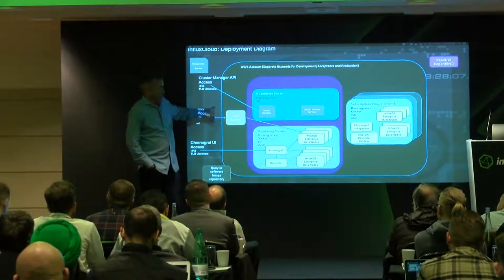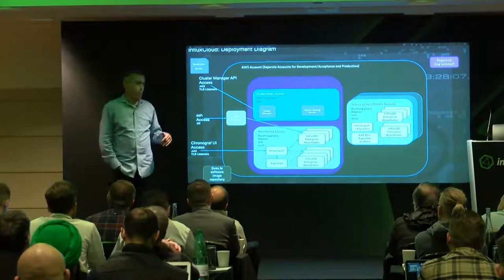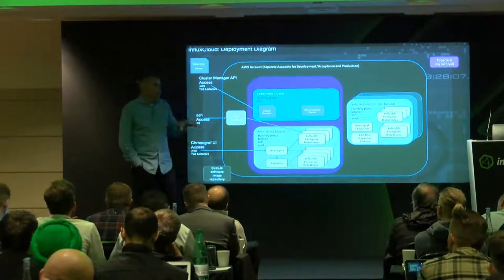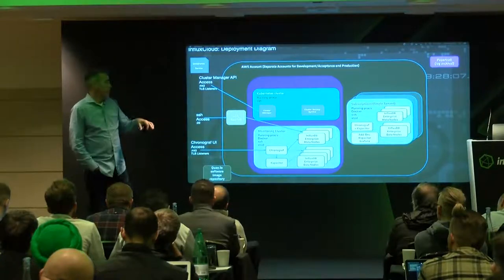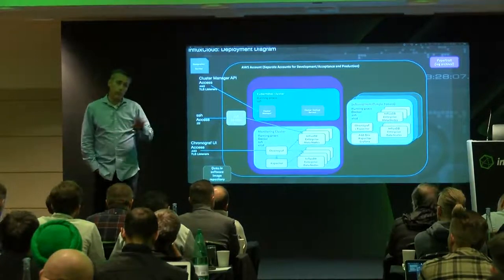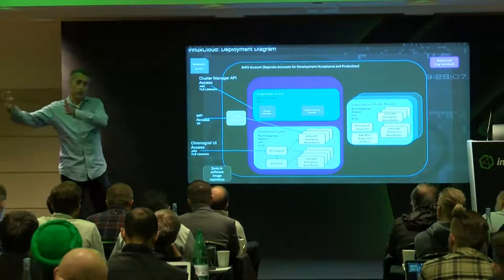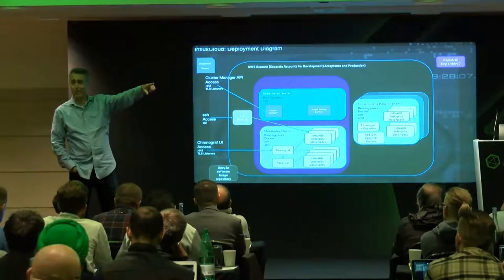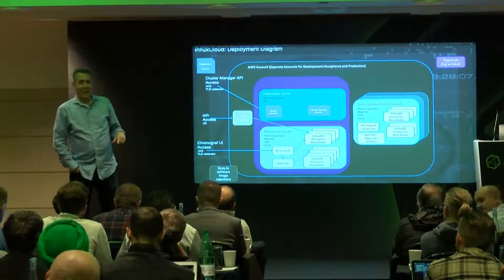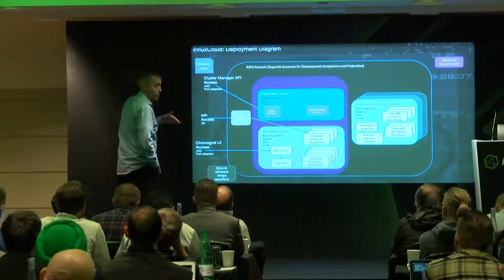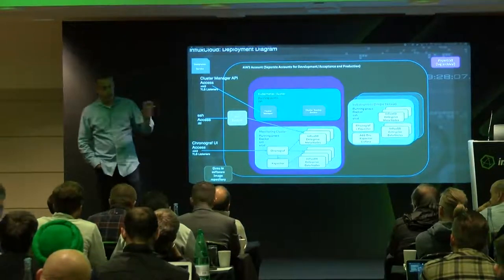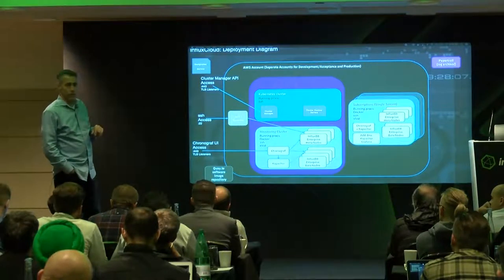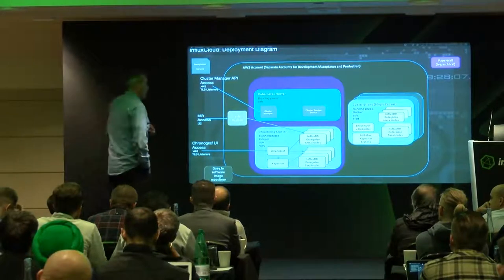We've got a bastion host from a security perspective that allows secure access and a mount point into the AWS account to access individual instances if needed. Everything right now in InfluxDB Cloud is a single-instance, single-tenant deployment — no multi-tenancy. That is actually what we're preparing to launch for Cloud 2. If anybody is playing with the Cloud 2 beta, that's the multi-tenant version. Right now it's only in US West; in the next 30 to 60 days we plan to have the European version launched, likely in Frankfurt or Ireland.